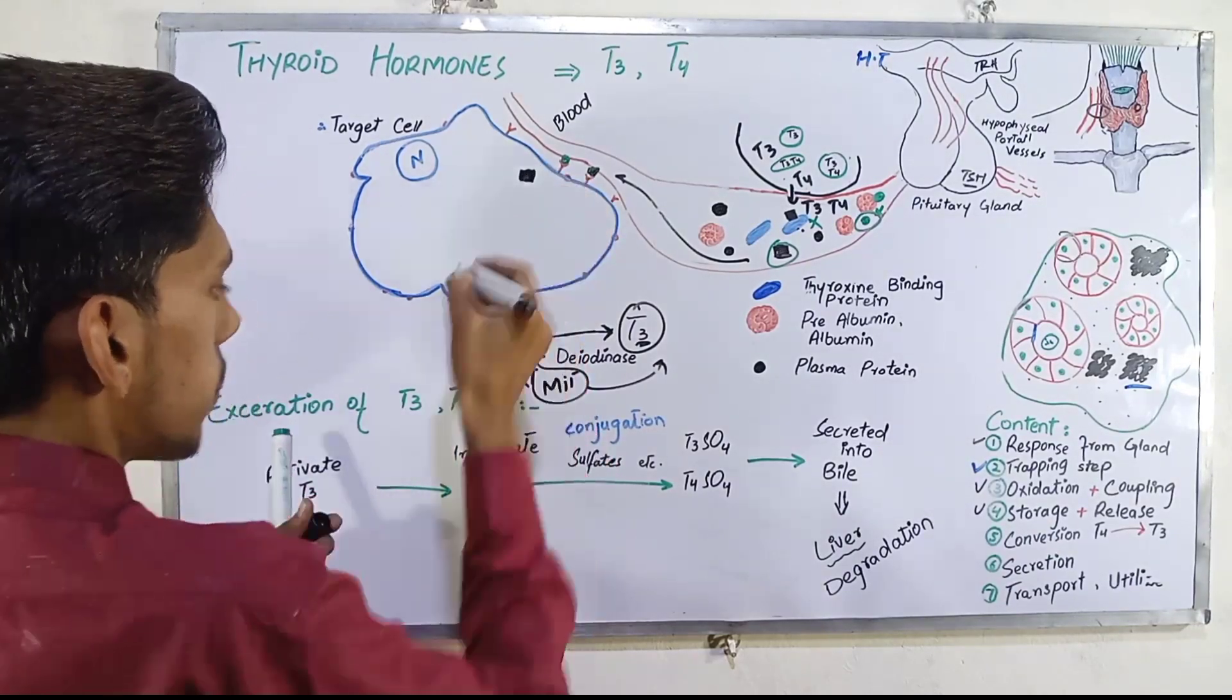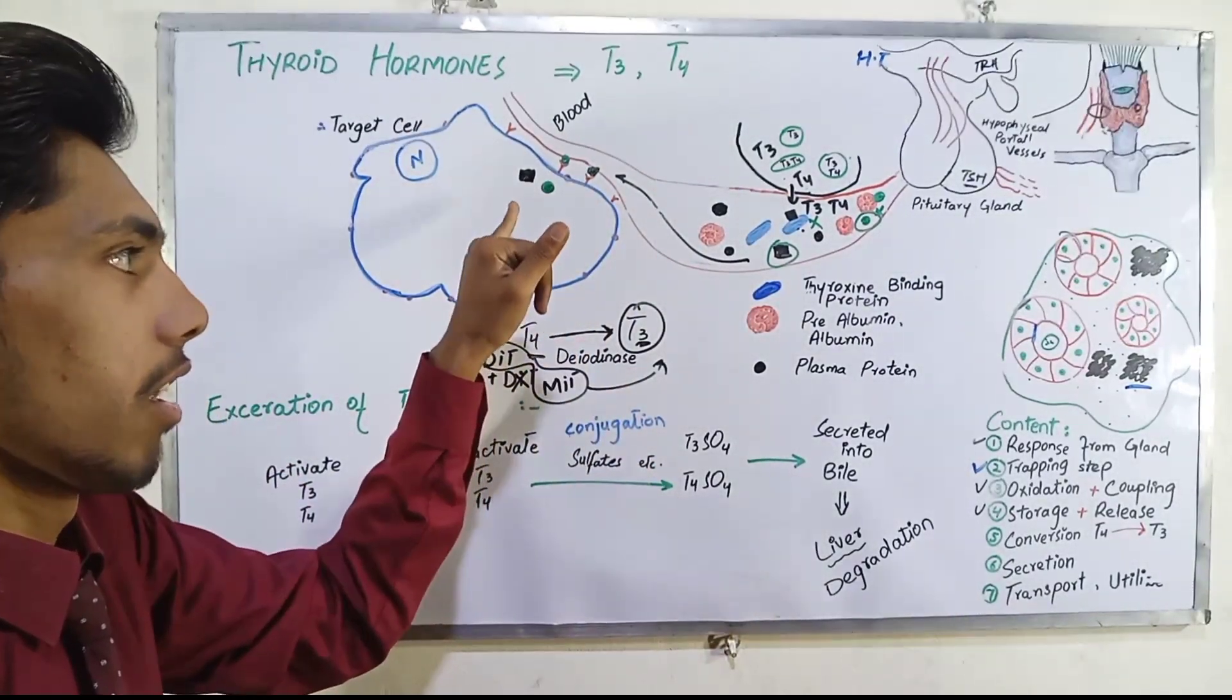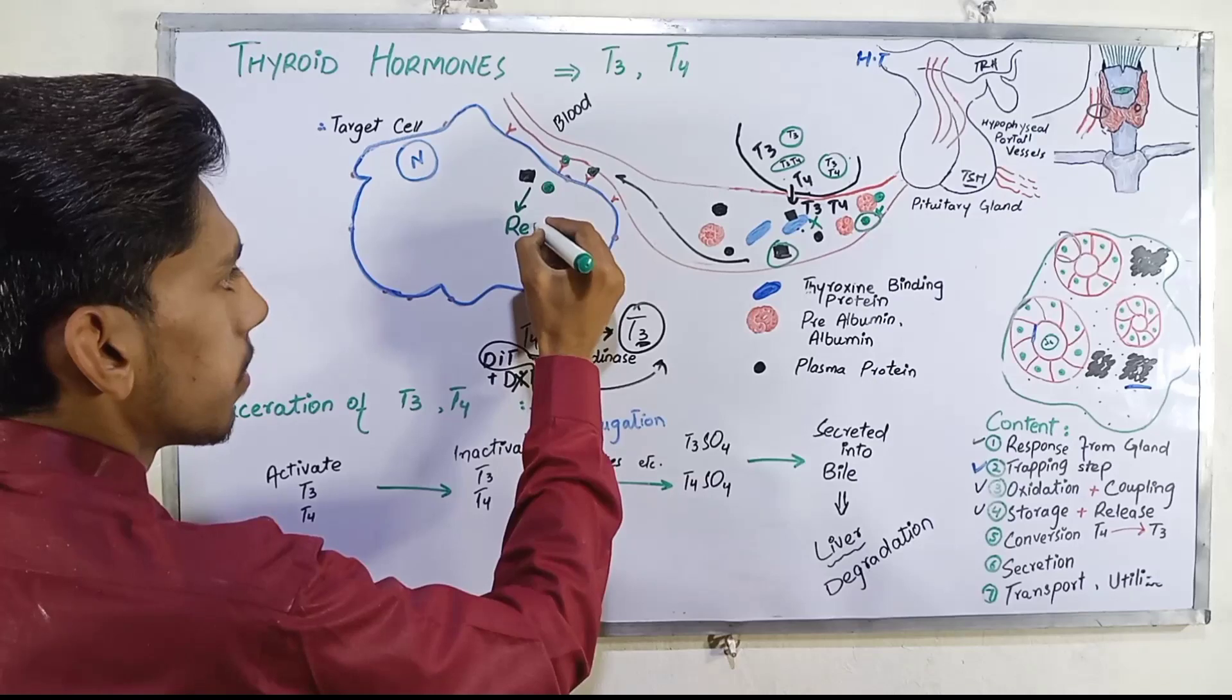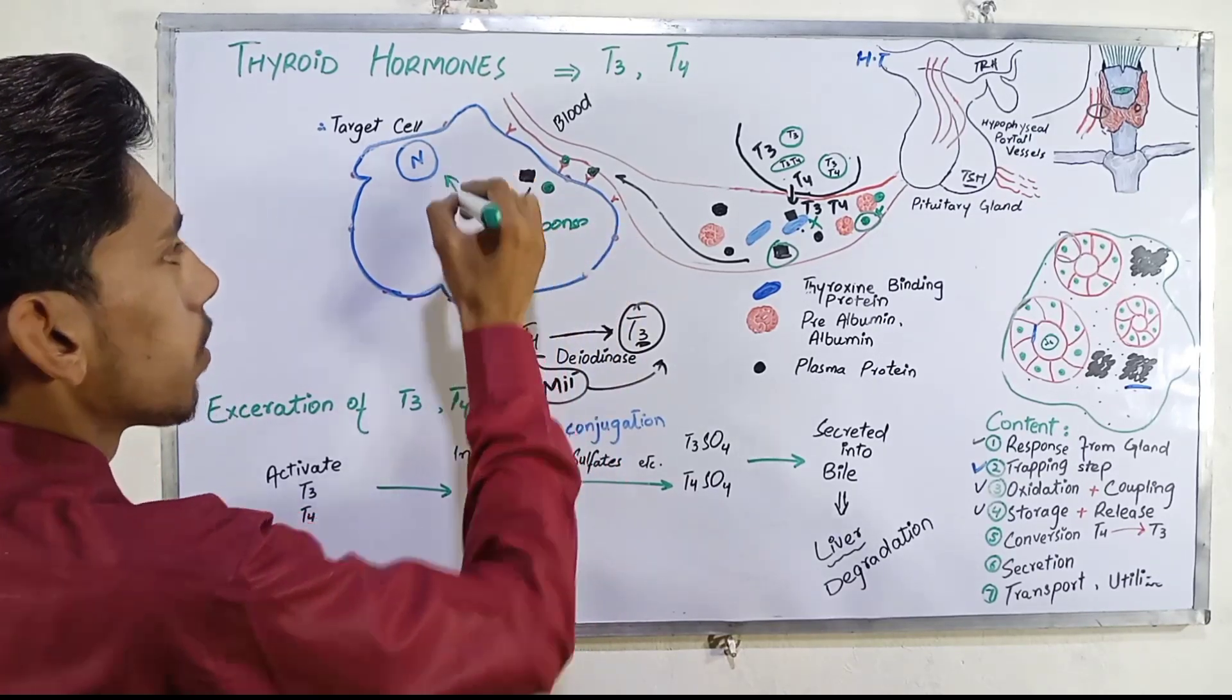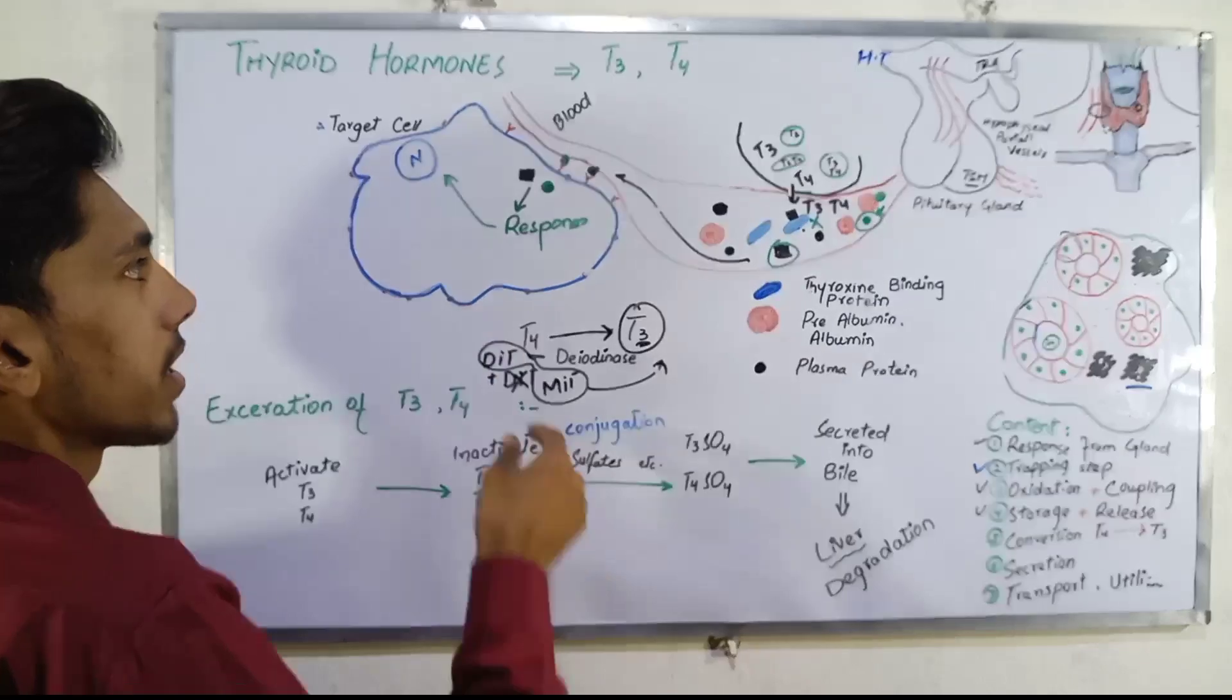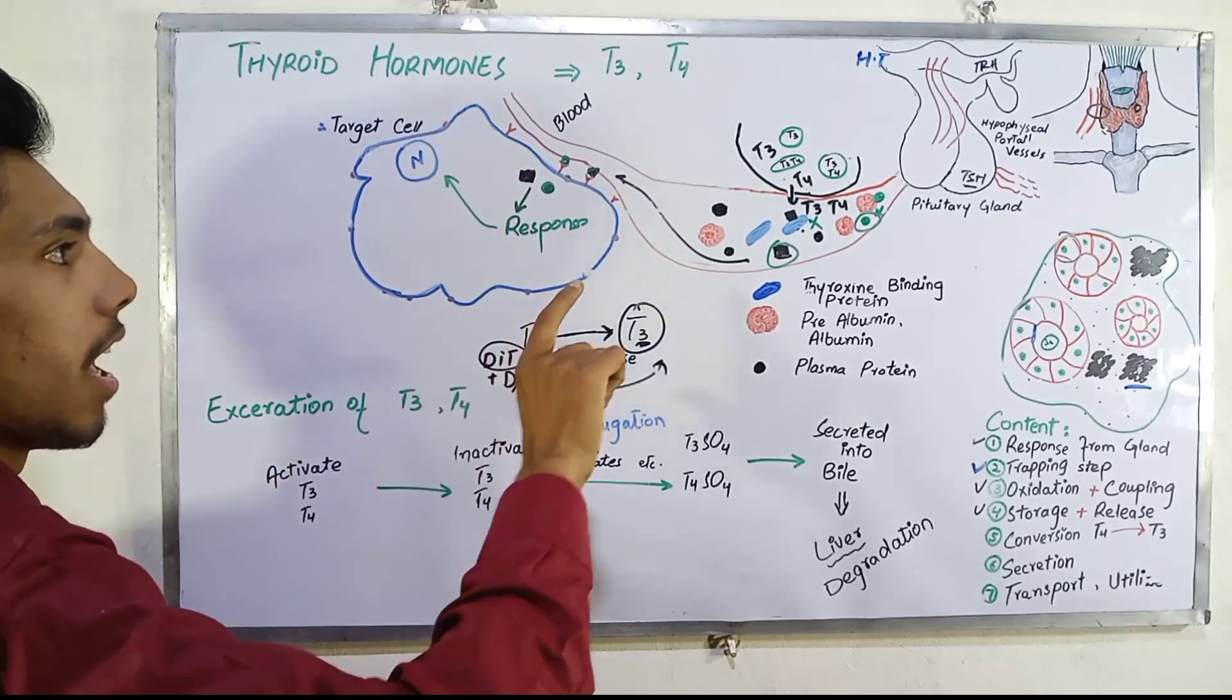T4 also converts to T3. T3 and T4 inside the cell - T3 and T4 act, with T3 being the active form.